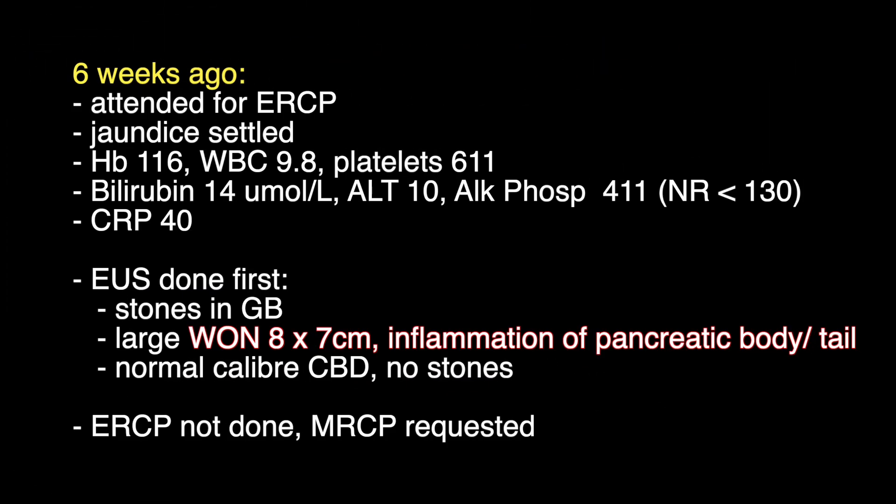Six weeks ago the patient attended for her outpatient ERCP. By this time her jaundice had settled and the bilirubin was down to 14 micromoles per litre, which is normal. The ALT was also back to normal and the alkaline phosphatase was still raised at 411. Because the jaundice had settled, an endoscopic ultrasound scan was done first. This showed the presence of stones in the gallbladder and surprisingly there was a wall of necrosis measuring eight by seven centimetres with inflammation of the pancreatic body and tail. The common bile duct was of normal calibre and there were no stones within it.